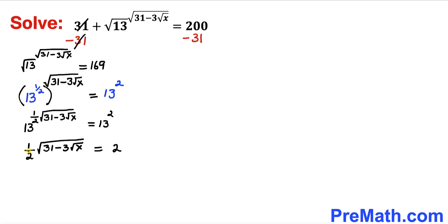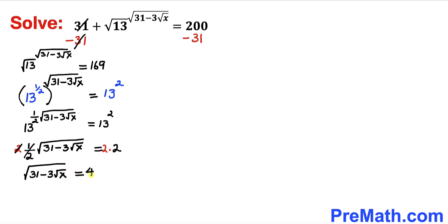Now I am going to remove this fraction by multiplying both sides by 2. The 2 and 1/2 cancel out, so we are left with: square root of 31 minus 3 times square root of x equals 4 on the right hand side.